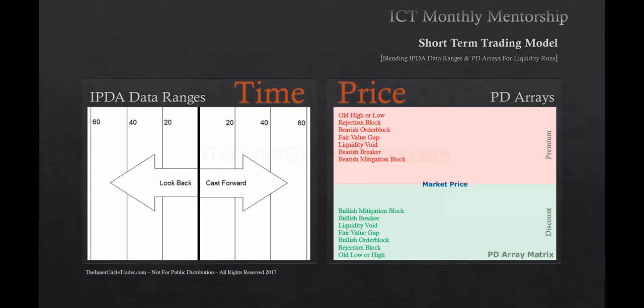The interbank price delivery algorithm will reach back into data arrays between the last 20 days, the last 40 days, and the last 60 days. Which data array they use or refer to is respective to the PD array in reference to price.